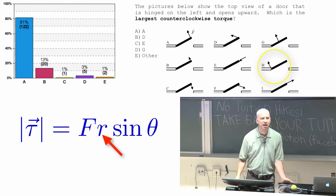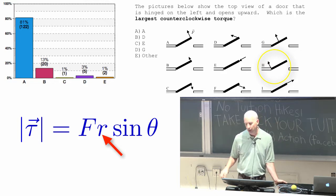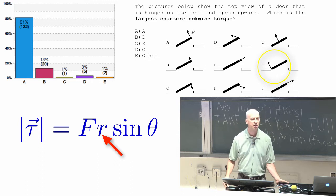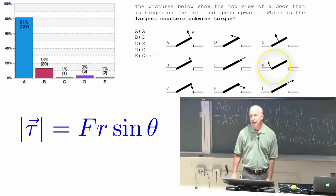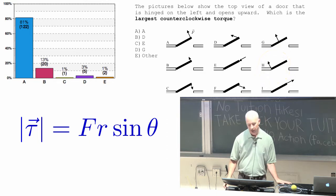But R is the distance from the hinge to the force. And H is applied right at the hinge, so R is zero, so the torque is zero. For H, the torque is zero because R is zero.